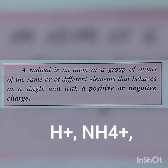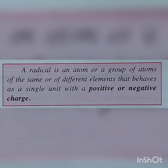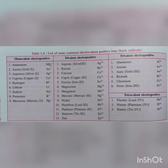Let us see what radicals are. A radical is an atom or a group of atoms of the same or different elements that behaves as a single unit with a positive or negative charge. We see some common electrovalent positive radicals on this screen. These are very important — you have to learn them: ammonium (NH4+), gold (Au+1), silver (Ag+1), and so on. All these radicals have to be memorized.